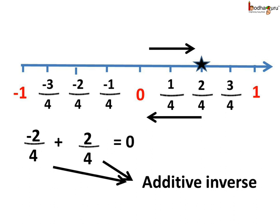The additive inverse of 2/4 is minus 2/4. First, we go to 2/4 on the number line. Then, adding minus 2/4 means going 2 steps towards the left. And where do we reach? We reach back 0. So rational numbers have additive inverses too.